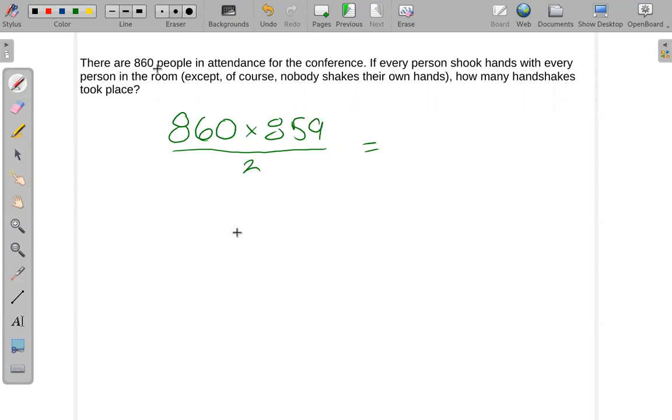We could call it introductions or elbow bumps, whatever. Another way to think about this is as a combination. So this would be 860 people chosen two at a time. And with combinations, order does not matter, unlike permutations.